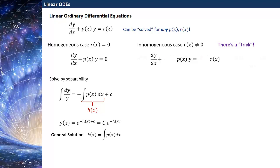The trick is we're going to multiply by the function e to the h(x), where h(x) is the same thing we just defined: h(x) is the integral of p(x)dx. Notice this means that h prime equals p(x). That's what we mean when we say h(x) is the anti-derivative of p(x). This is the particular magic in this trick.